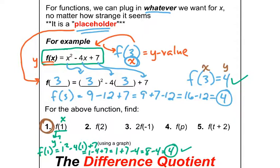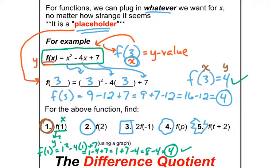Pause the video and try number 2. Look at number 3 — what's that 2 doing out in the front? And how about number 4, f of p? And then number 5 will be really interesting. Try at least number 2, maybe number 3, and we'll catch up in just a second.